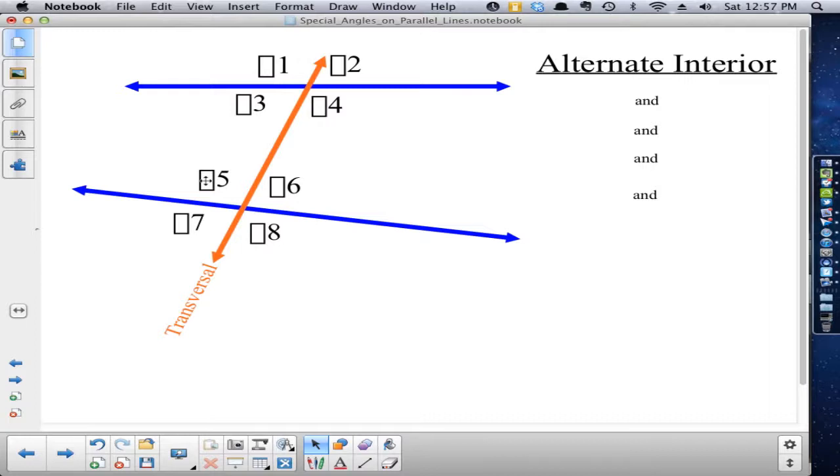One is the alternate interior angle. So let me break down those two words and what we mean by them, and it'll make more sense. When I say interior, I'm saying interior to these two blue lines, or inside of them, so inside the two lines that are being cut or intersected by the transversal.